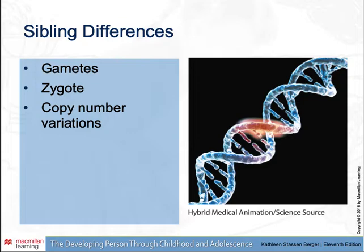Sibling differences involve gametes — reproductive cells, sperm and ova, consisting of 23 chromosomes. A zygote is two gametes, sperm and ovum, combined to produce a new individual with 23 chromosomes from each parent. Copy number variations are genes with various repeats or deletions of base pairs, which may be inconsequential, lethal, or something in between.